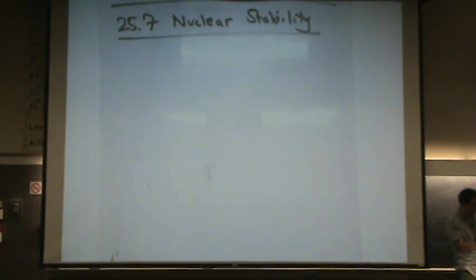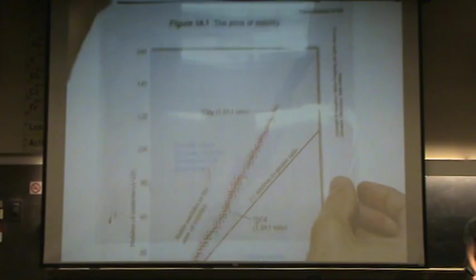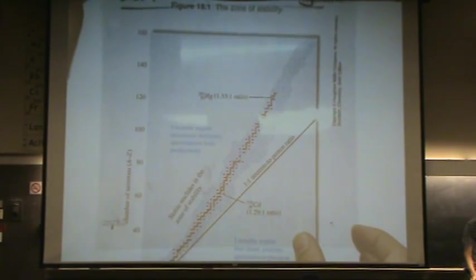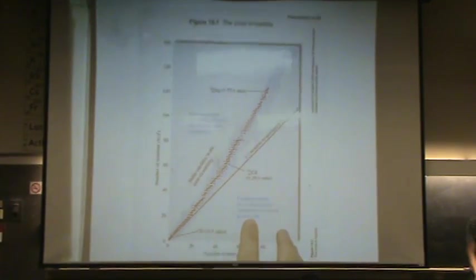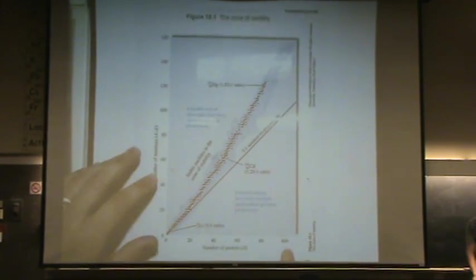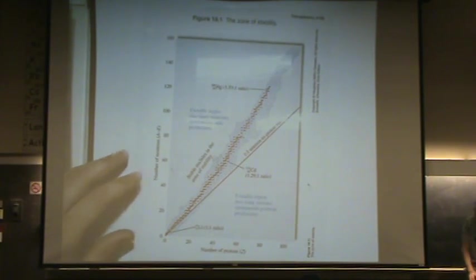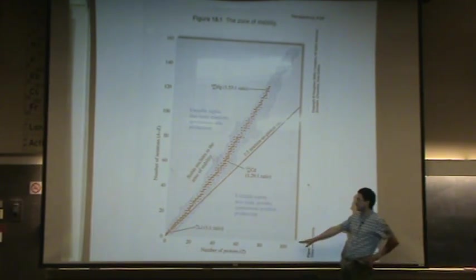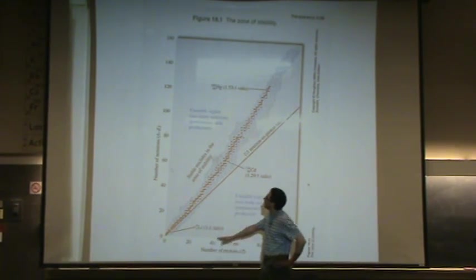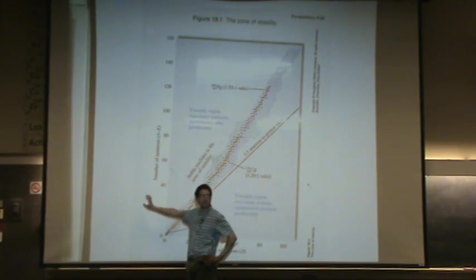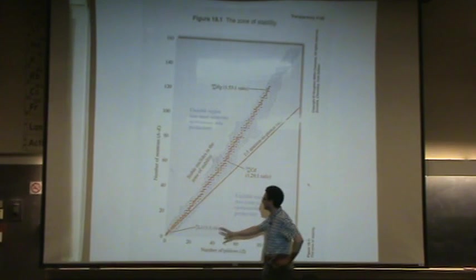And this is shown graphically with something called the zone or island of stability. It looks something like this. Let me zoom out so you can see the whole picture here. And you can see this in your text if you want. Here we have on the x-axis the number of protons, Z. That's your atomic number. Versus just the number of neutrons. So your mass number minus your atomic number to find the number of neutrons.